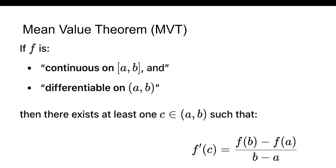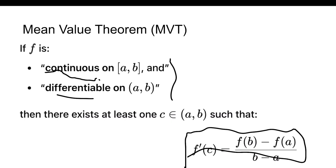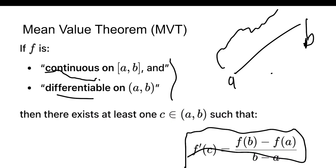The Mean Value Theorem pops up a lot in FRQs. If f is continuous on [a, b] and differentiable on (a, b), then there exists at least one c in (a, b) such that f'(c) = (f(b) − f(a)) / (b − a). A quick trick: if f is differentiable, it must be continuous — differentiability implies continuity. Essentially, there must be at least one value c whose slope equals the slope of the secant line from a to b.